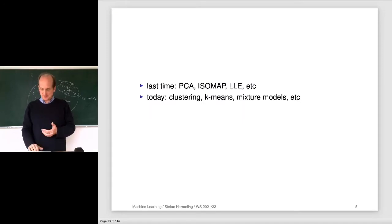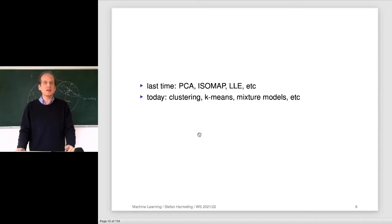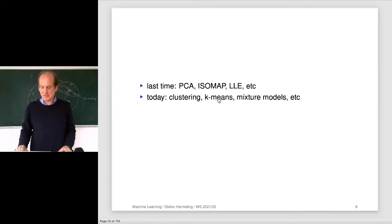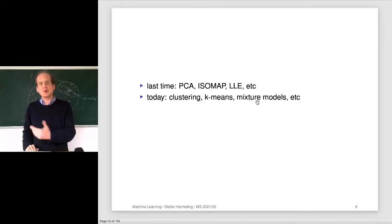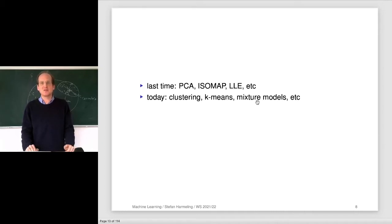Last time we looked at PCA, isomap, and related methods. Today we look at discrete unsupervised learning — clustering methods. We focus on k-means, and then take a general point of view on mixture models and latent variable modeling. There are many different clustering methods, but once you understand one, you can use the others as a black box — though the algorithms behind them are also fun to understand.